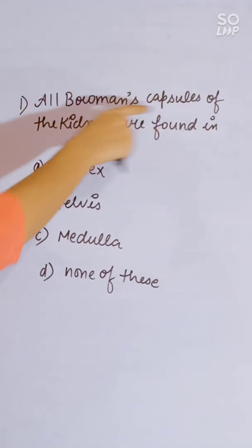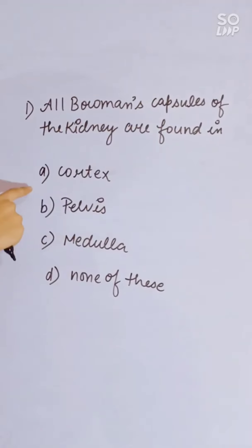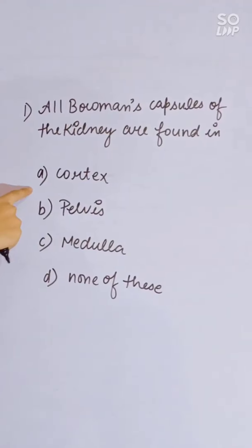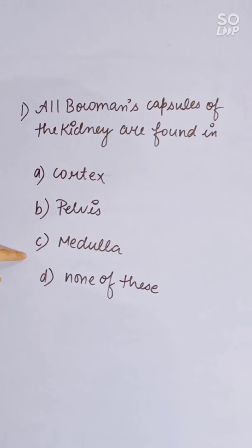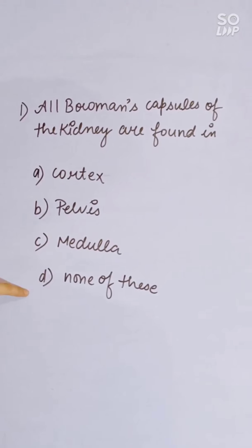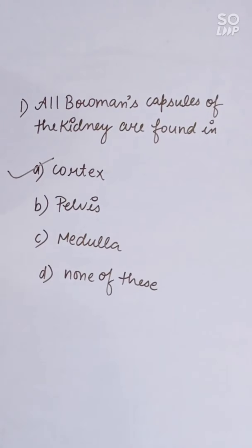All Bowman's capsules of the kidney are found in: cortex, pelvis, medulla, or none of these. Correct answer is A, cortex.